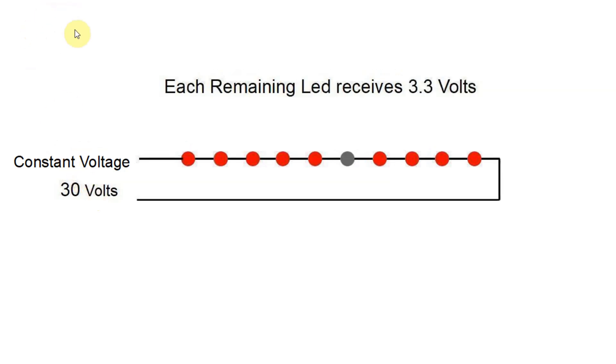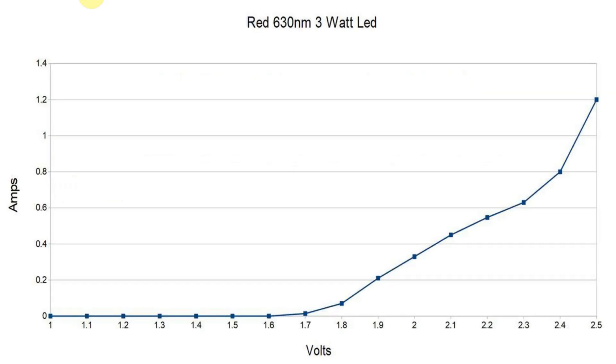Now if a LED blows, we've got a problem because the voltage stays at 30 volts and each remaining LED is now getting 3.3 volts. If you watched the second video, you'll know that the current drawn by the LED increases really rapidly as the voltage goes up. In this example, you've got 700 milliamps, which is their standard operating current.